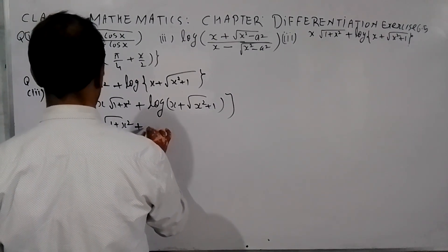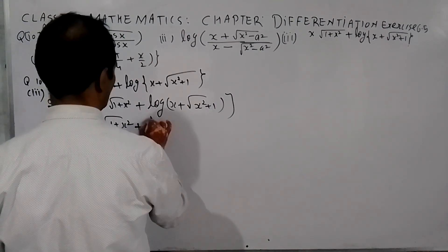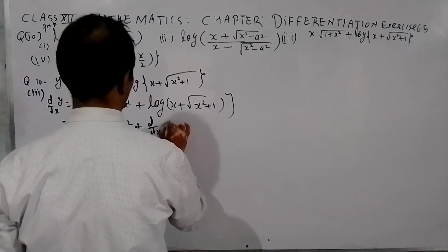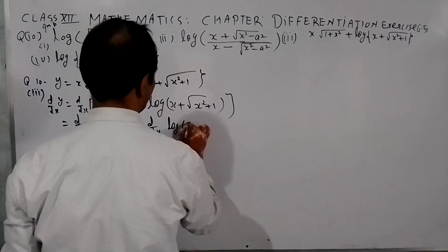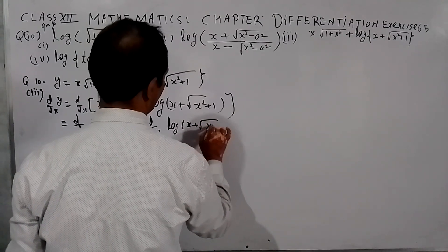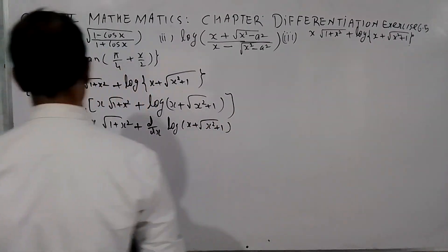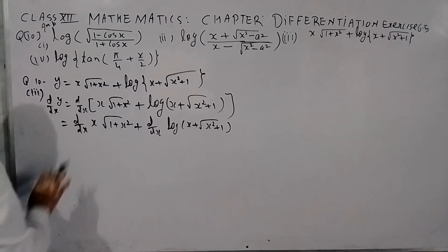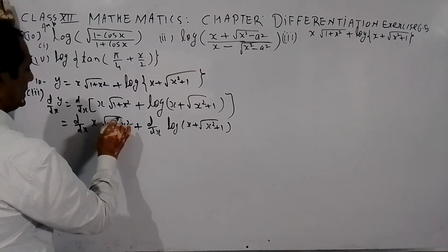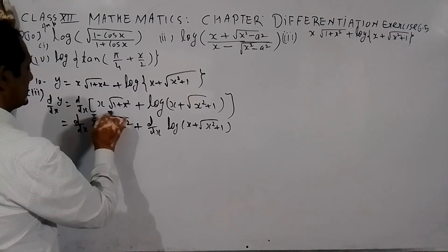So, d by dx of x root 1 plus x square, plus d by dx of log of x plus root x square plus 1. This is a product of functions — this is the first function and this is the second function.